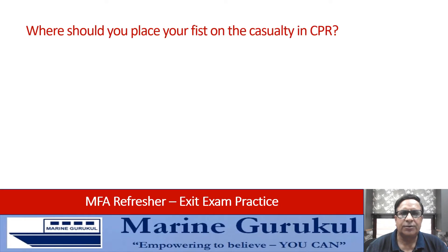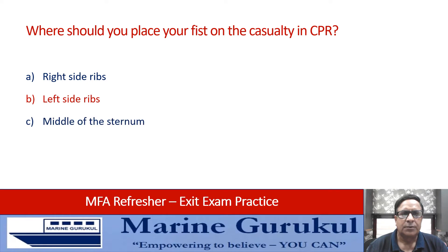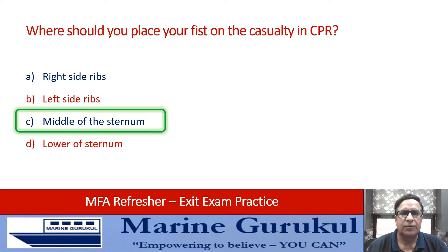Where should you place your fist on the casualty during CPR/TPR? Right side of ribs, left side of ribs, middle of the sternum, or lower of the sternum? The answer is C — in the middle of the sternum is where you place your fist when giving CPR/TPR.